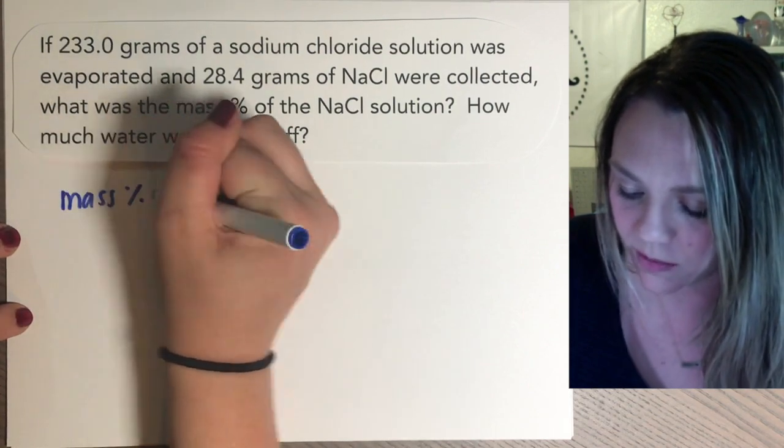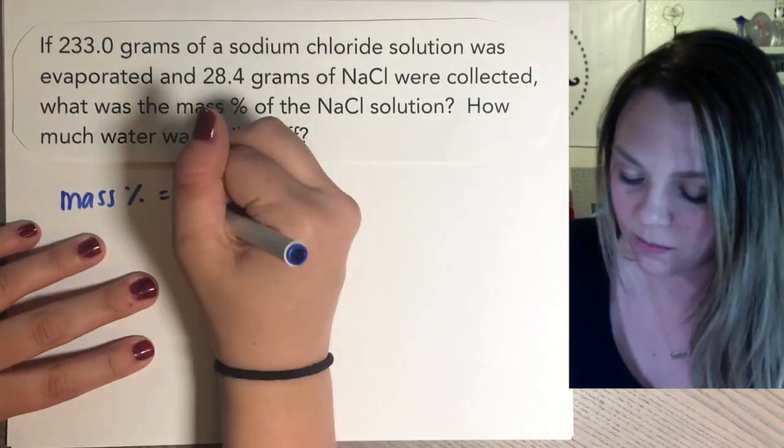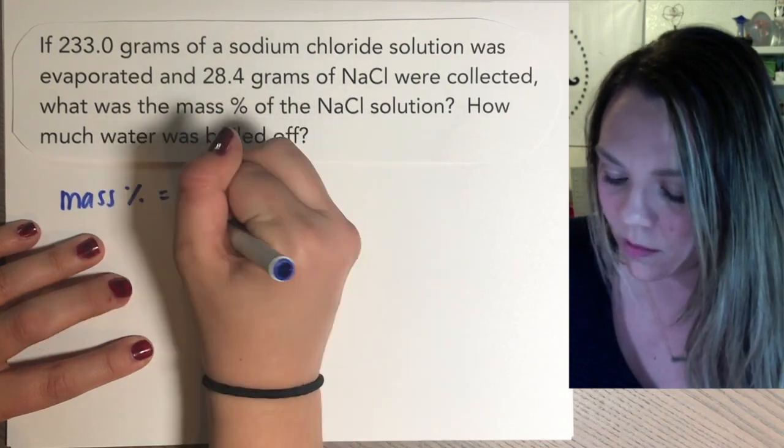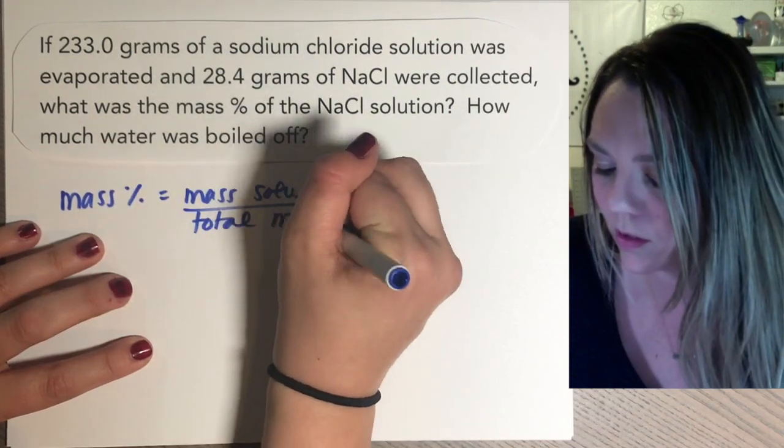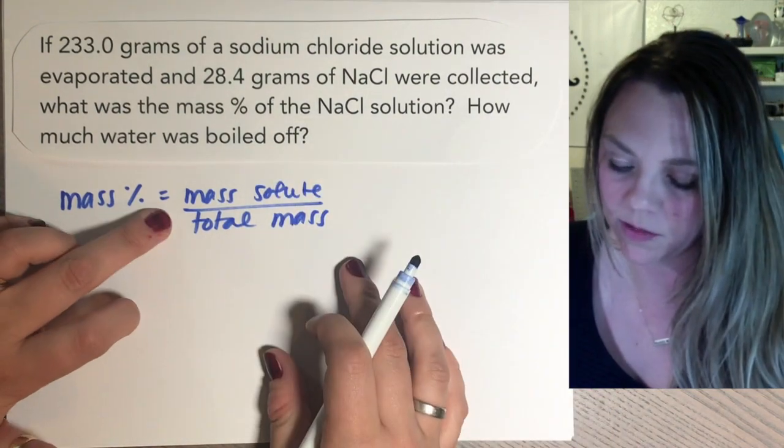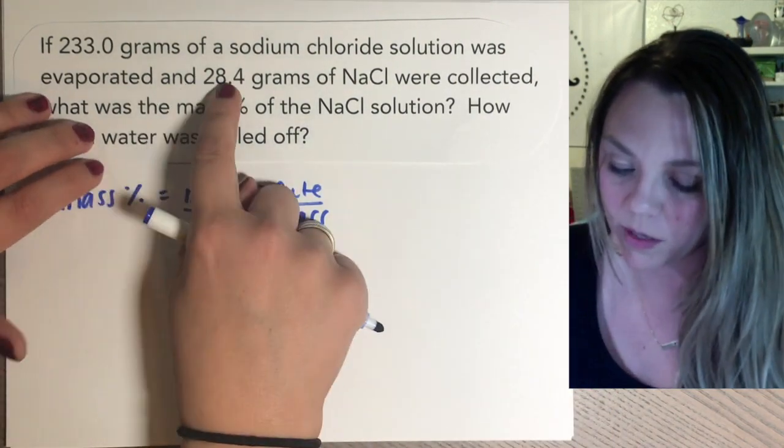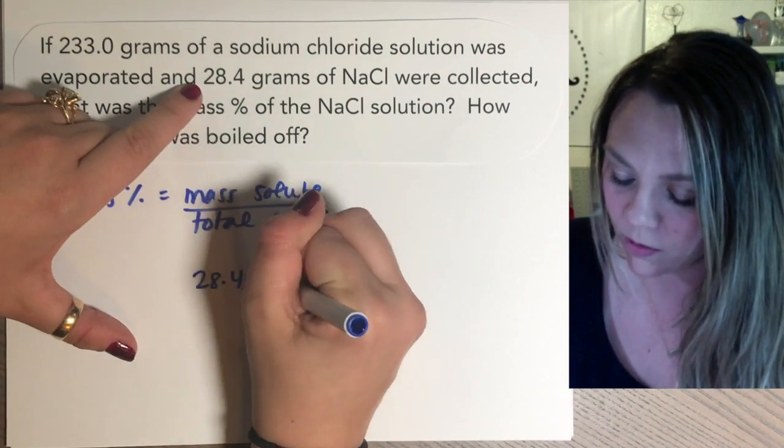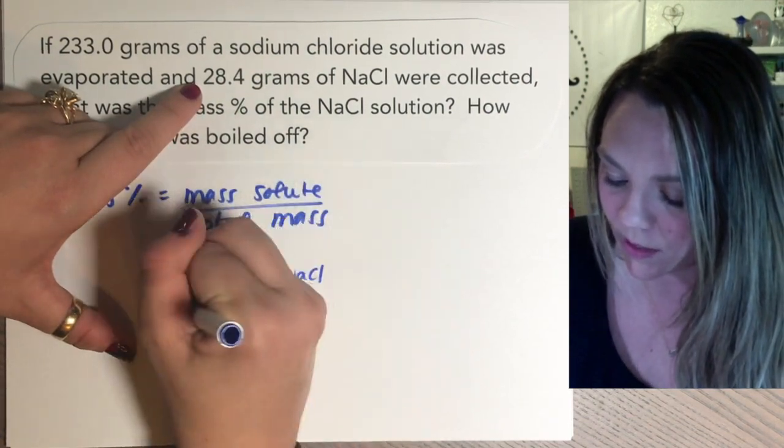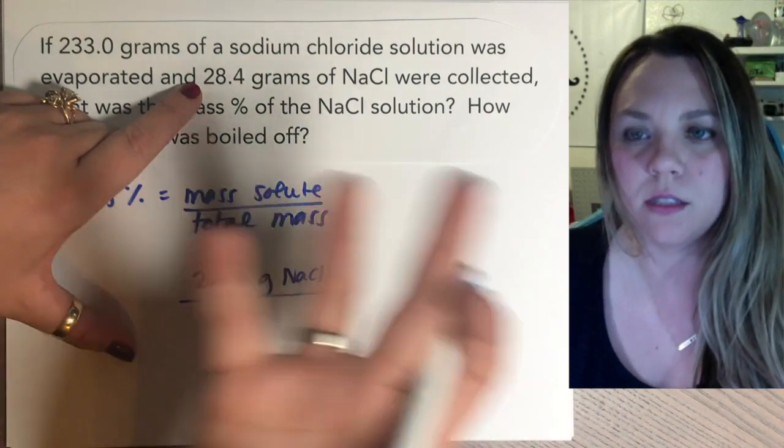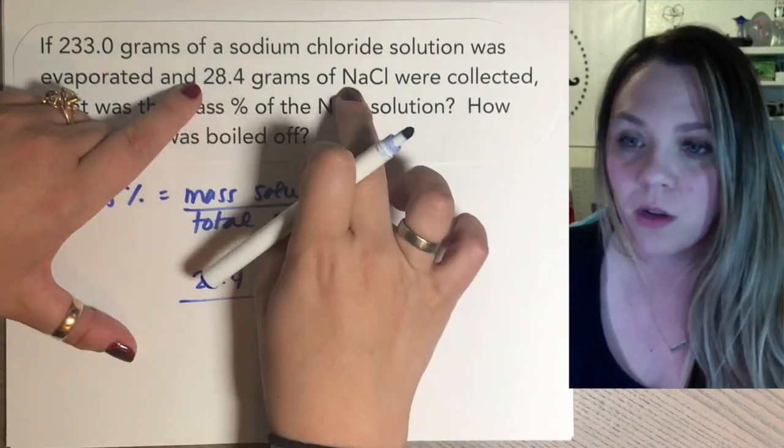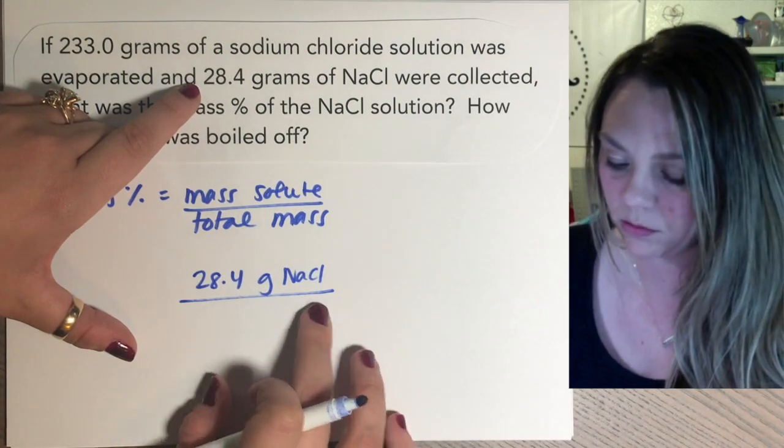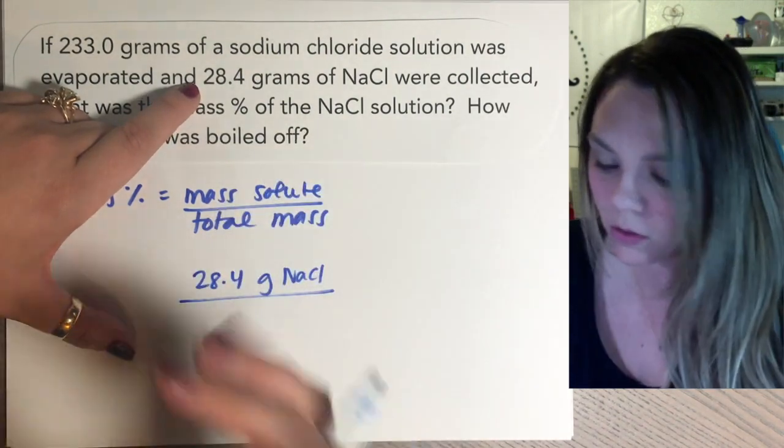You know that mass percent is the mass of your solute divided by your total mass. So we just need to figure out what the mass of my solute was. Well, look at that. It tells me right here, I get 28.4 grams of NaCl that didn't evaporate. That means that's how much salt was actually in the solution out of my total solution.